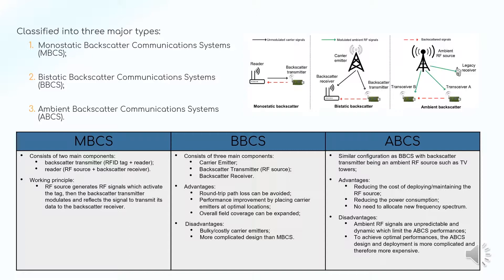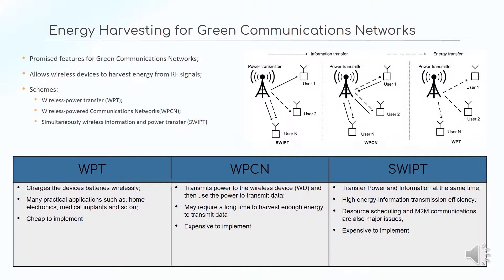Monostatic backscatter consists of a backscatter transmitter and a reader, and it works by a source generating radio frequency signals through which the transmitter modulates and reflects the signal. Bistatic consists of a carrier emitter, backscatter transmitter, and receiver. Ambient backscatter is very similar to bistatic communication systems, using radio frequency sources such as TV towers. These are the energy harvesting applications of the ambient backscatter system.